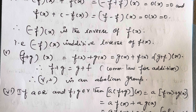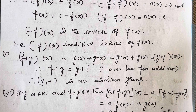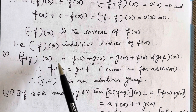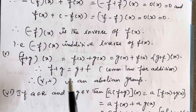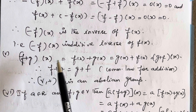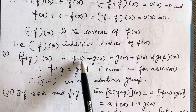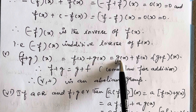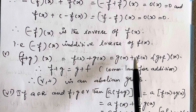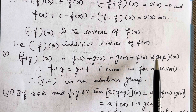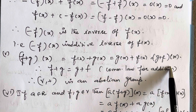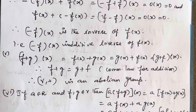Next, we have the last property to show it is abelian: f+g must equal g+f. (f+g)(x) = f(x)+g(x) = g(x)+f(x) = (g+f)(x). Therefore the commutative law for addition is satisfied. Hence V(+) is an abelian group.